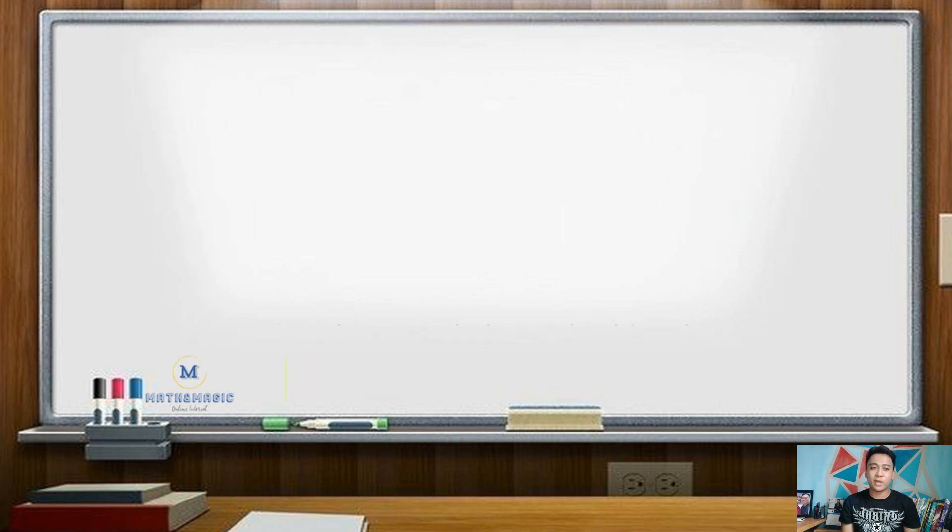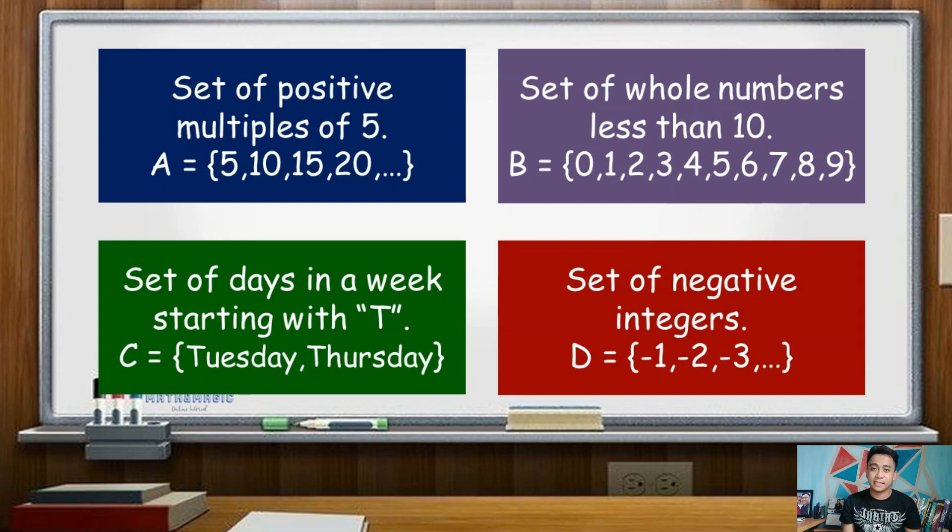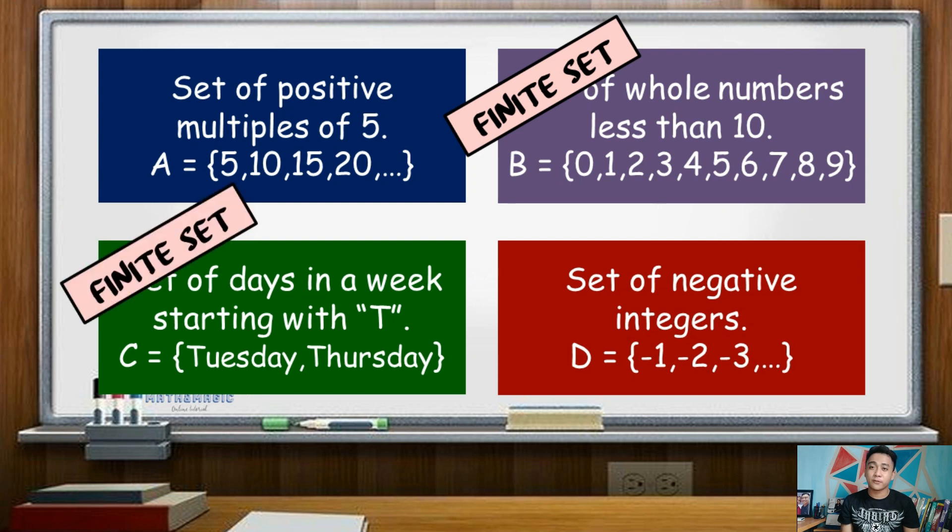Now, can you identify which of these are finite and infinite sets? Very good. Set B, which is the set of whole numbers less than 10, and set C, which is the set of days in a week that starts with T, are both finite sets.